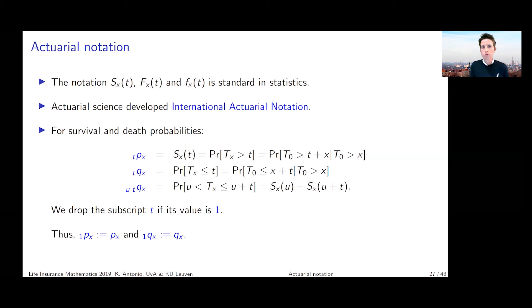And that is if your duration t for _tP_x and _tq_x, if that refers to a period of one year, then we simply drop the subscript t. So if t is equal to one, we'll just write q_x and p_x in short.